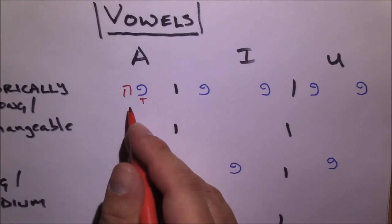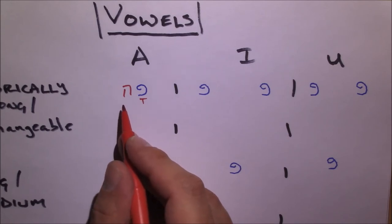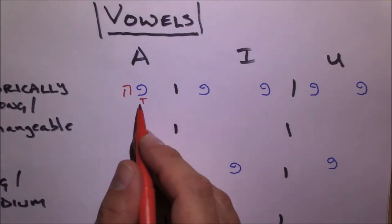And if it's at the end of the word, which is where often the kamatz hey appears, if it has a dot in it, that is called a mappiq and that means it is an original consonant, not a vowel carrier. But in this case, you're just pronouncing this ah, just like an A.